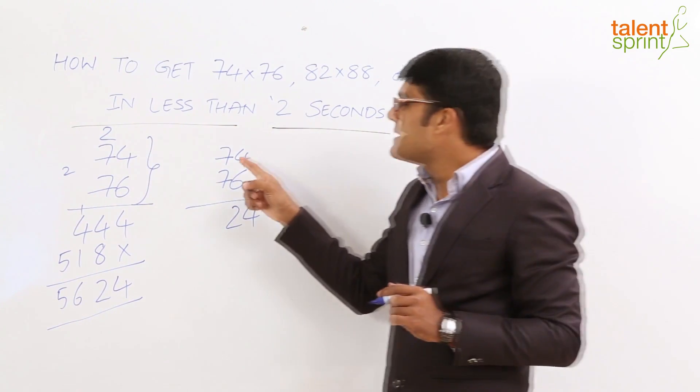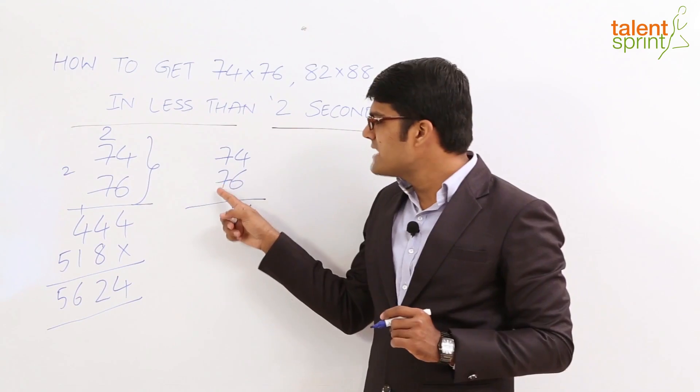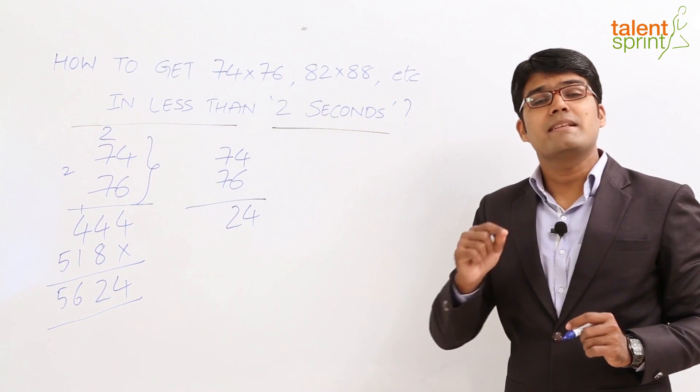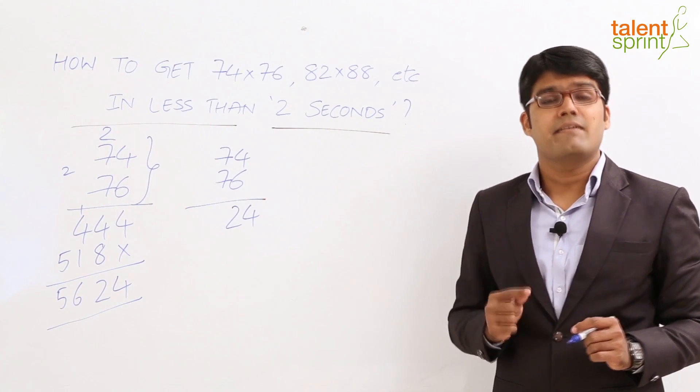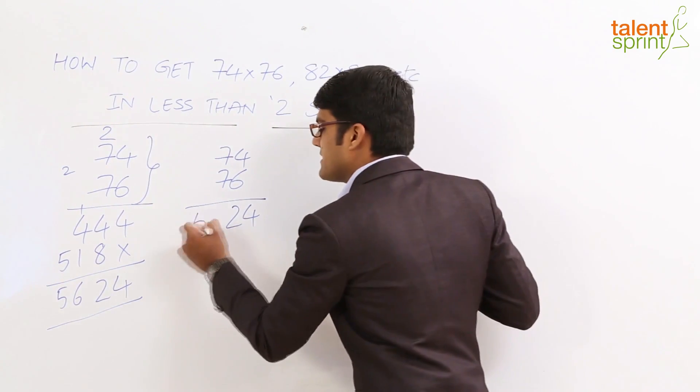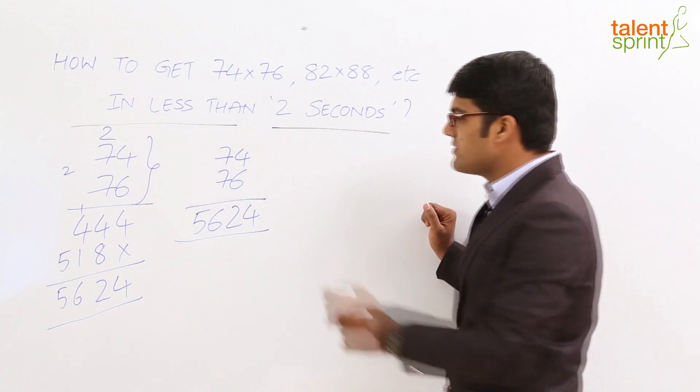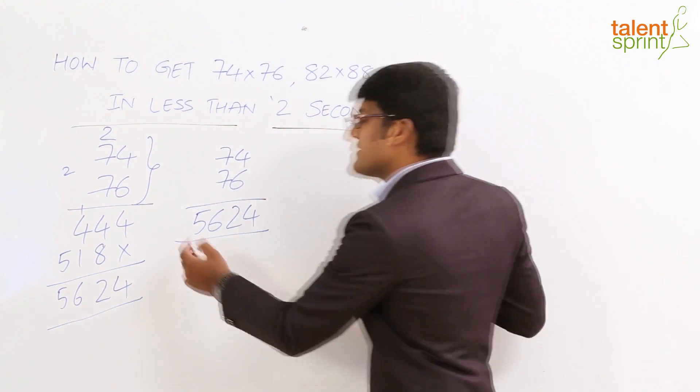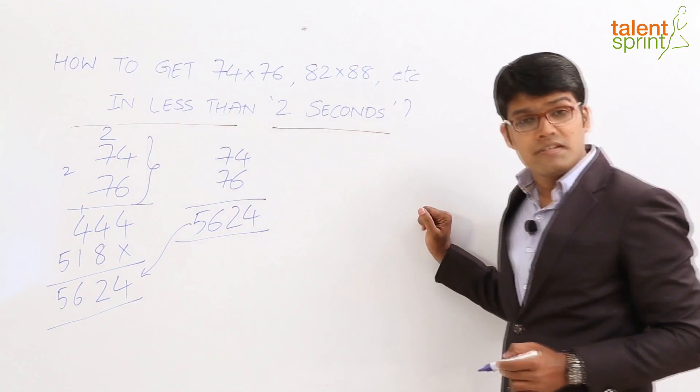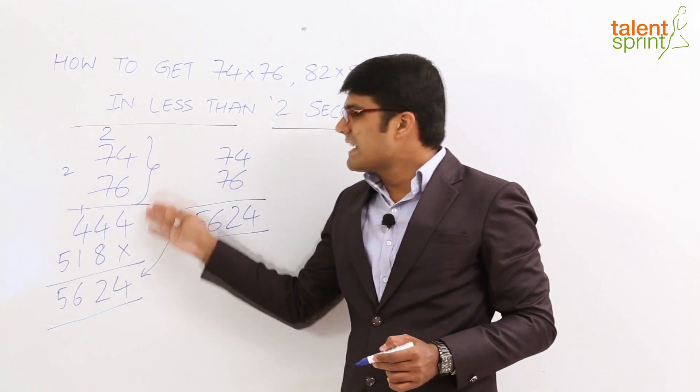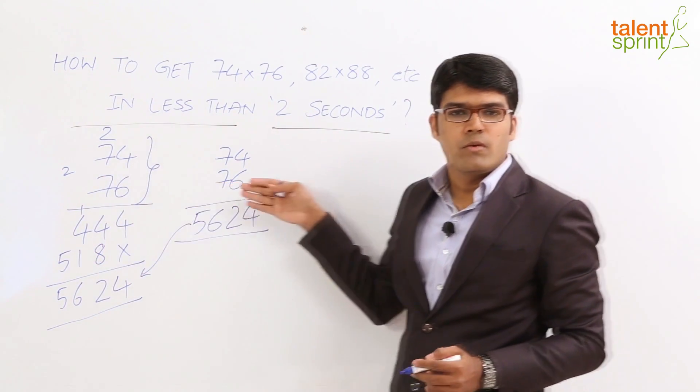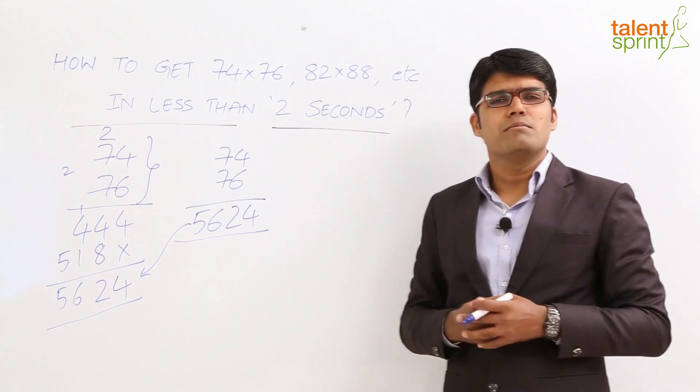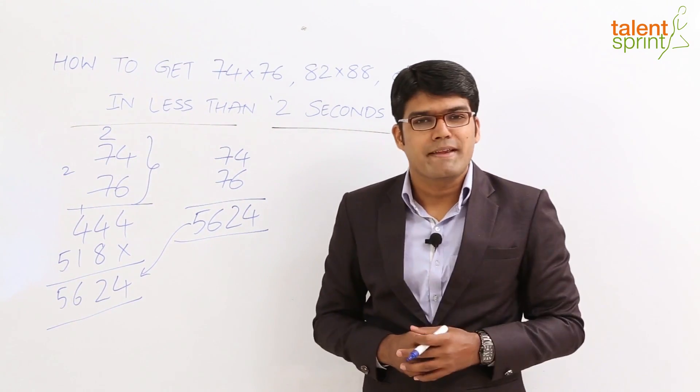The next step is to multiply the tens place with the next integer. Here the tens place is 7 in both numbers, so multiply 7 with the next integer, that is 8. 7 into 8 gives us 56 and this completes the answer. So 74 into 76 is 5,624, which is same as we got in the traditional method, but there is a lot of writing involved there which we have avoided. This is how we can multiply partially complementary numbers in just about 2 seconds.